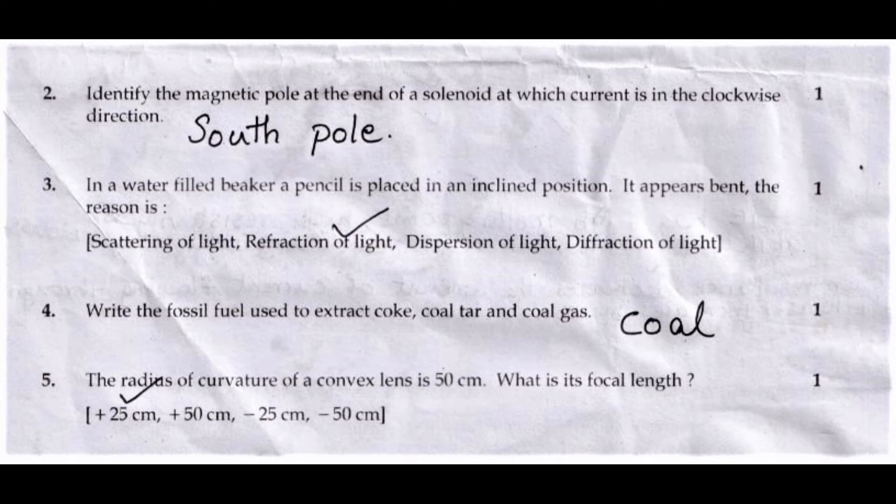Fifth question: The radius of curvature of a convex lens is 50 cm. What is its focal length? Answer: +25 cm.